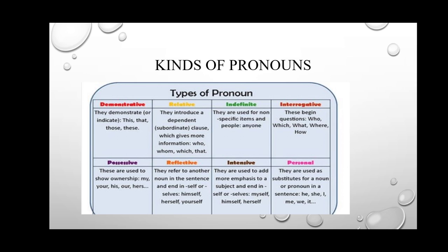Personal pronouns are used as substitutes for a noun or pronoun in a sentence — he, she, I, me, we, it. This is one of the most common types of pronoun that we are familiar with. We substitute a name with he or she; if there is a person's name, he or she will replace that name.